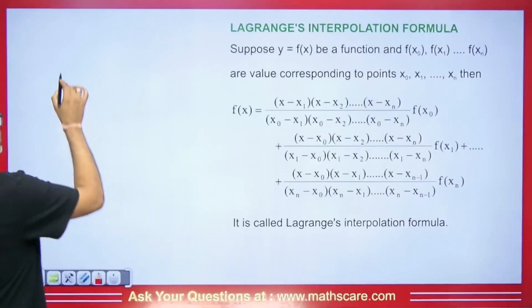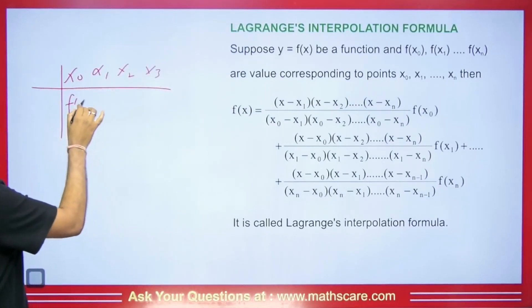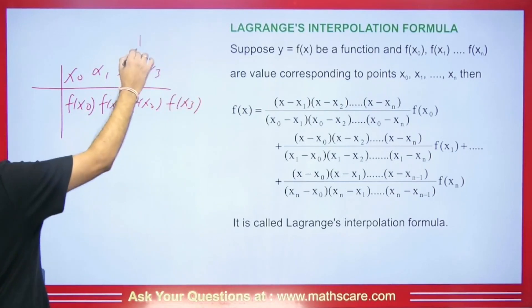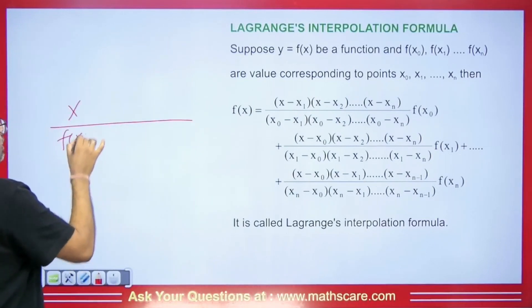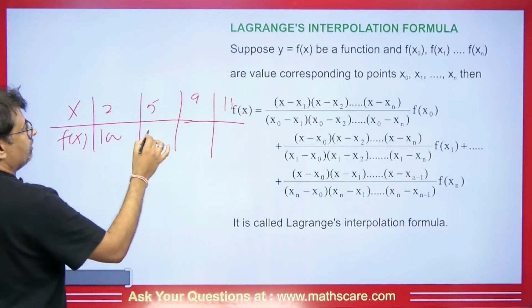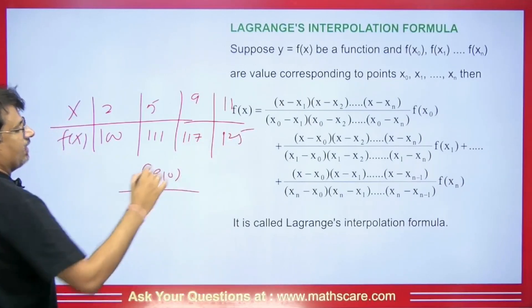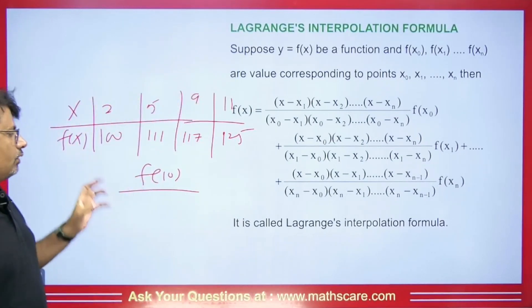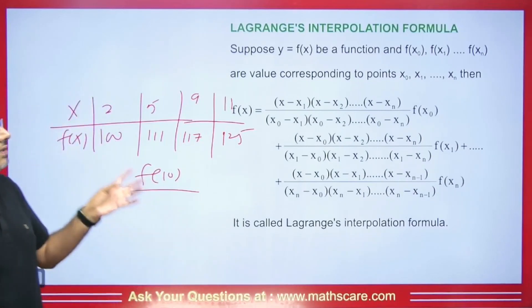So if we have any value — say we are given x0, x1, x2, x3 and corresponding values fx0, fx1, fx2, fx3. Let's take an example: x values are 2, 5, 9, 11 and corresponding fx values are 100, 111, 117, 125, and we are asked what is the value of f(10). As you can see, this is an unequal interval — differences of 3, 4, and 2. So we can't use Newton forward, backward, Stirling, or Bessel. We have to use the Lagrange formula only.